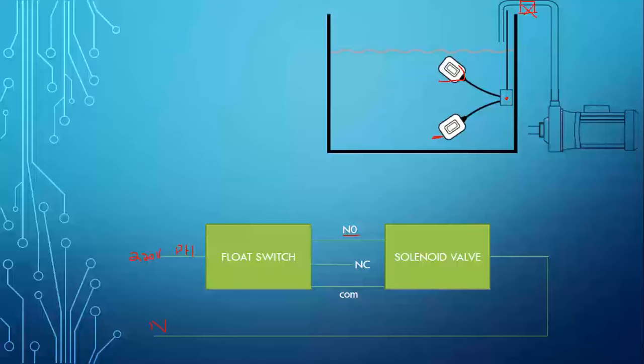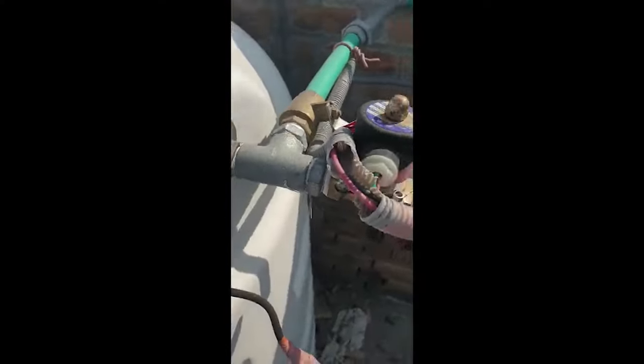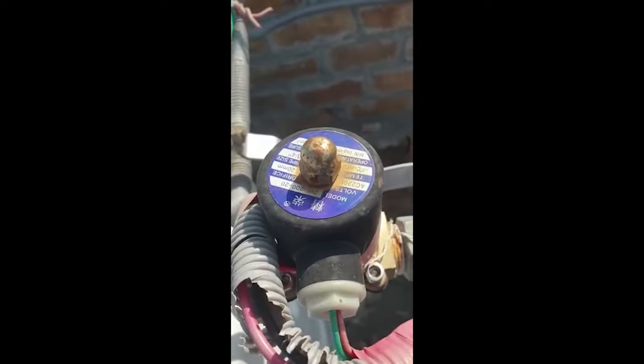When the solenoid receives supply, it closes the valve and does not let more water go inside the tank. This way the water is safe and we have automatic control of the water level in the tank. The solenoid valve — a normally closed type — is connected at the inlet side of the tank, and the float switch is inside the tank. You can see the yellow and blue float switch here.